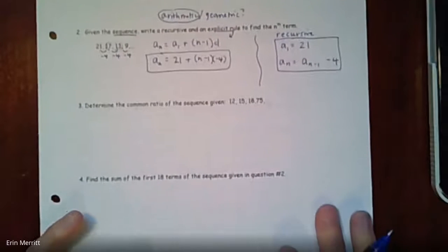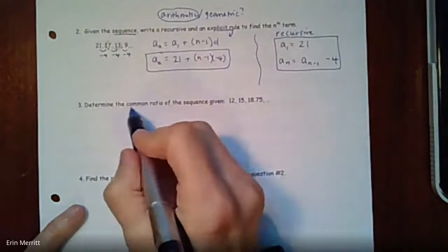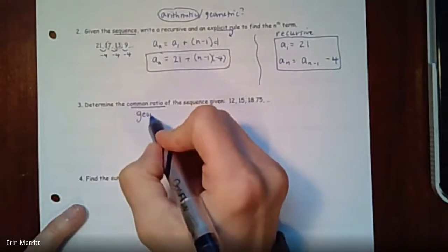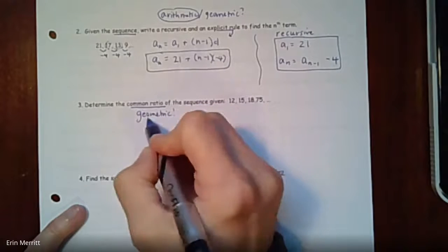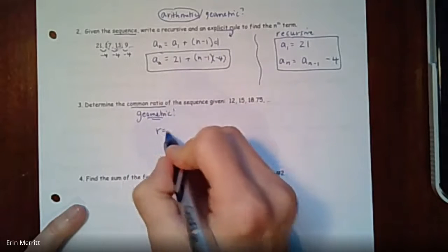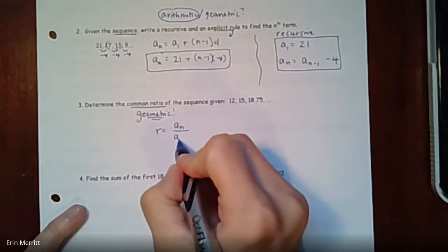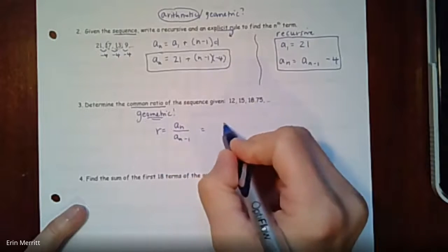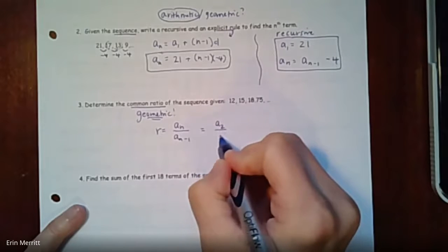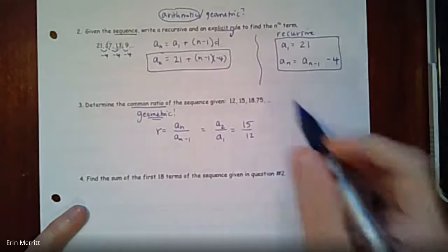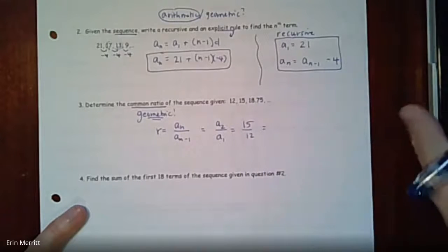Determine the common ratio of the sequence given. Common ratio only applies to when you have a geometric sequence, and that can always be calculated by taking any term and dividing it by the term before it. Specifically here we could take the second term and divide it by the first.